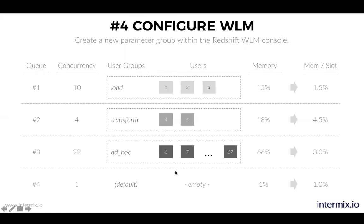Now you have a situation where you have high concurrency and every query can run. The Redshift docs recommend not going above 15 in concurrency, and that's because it's really hard to figure out the right concurrency. We have a way to figure out how many slots you really need and how much memory. You can go up to 50 query slots — that's what Redshift allows. If you get the memory right and the concurrency right, there's no issue with running 50 slots. We have customers who do that.